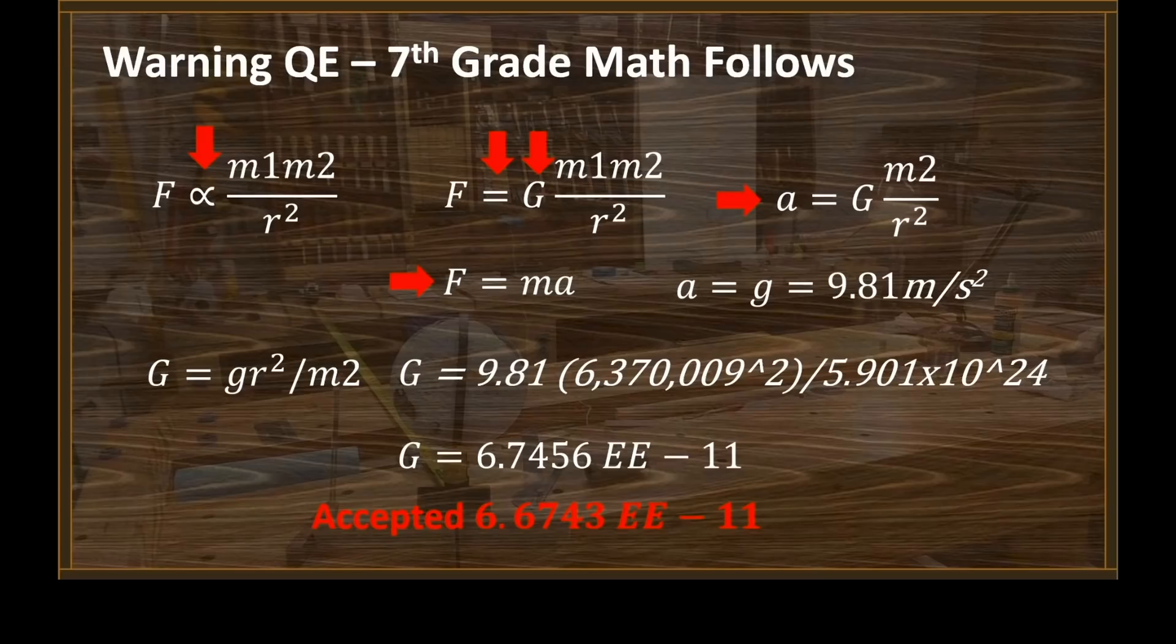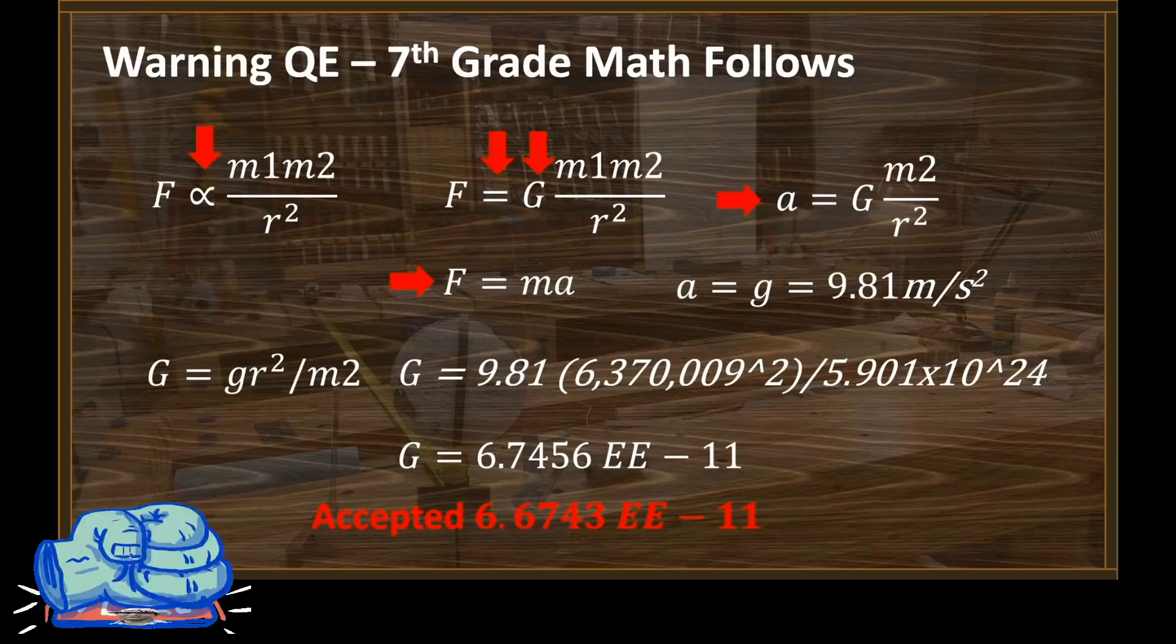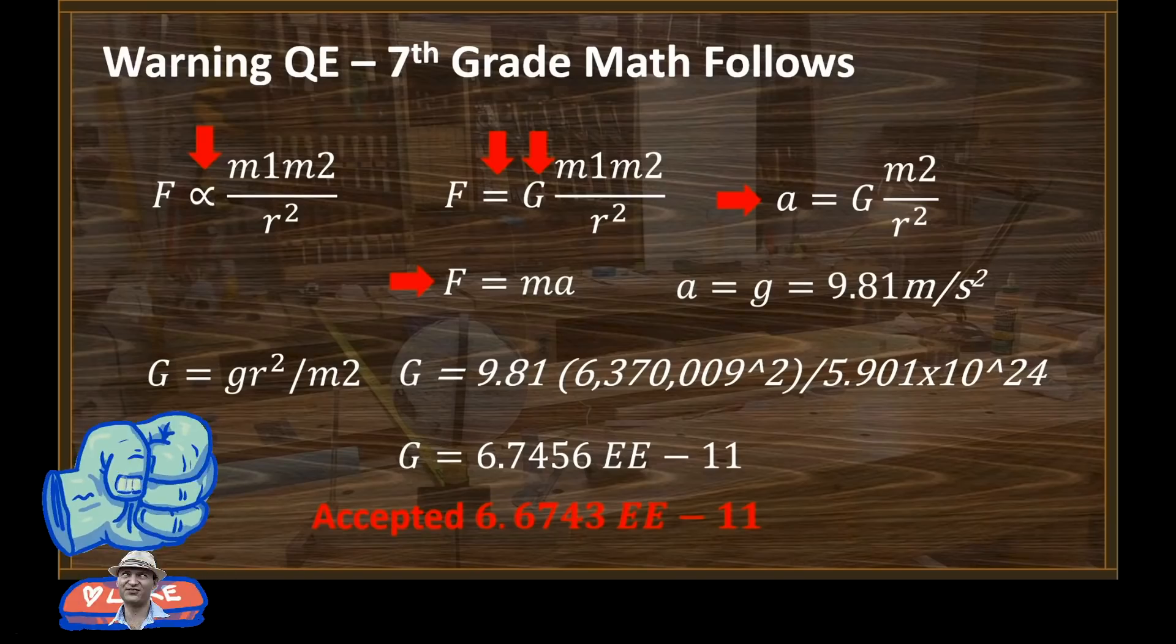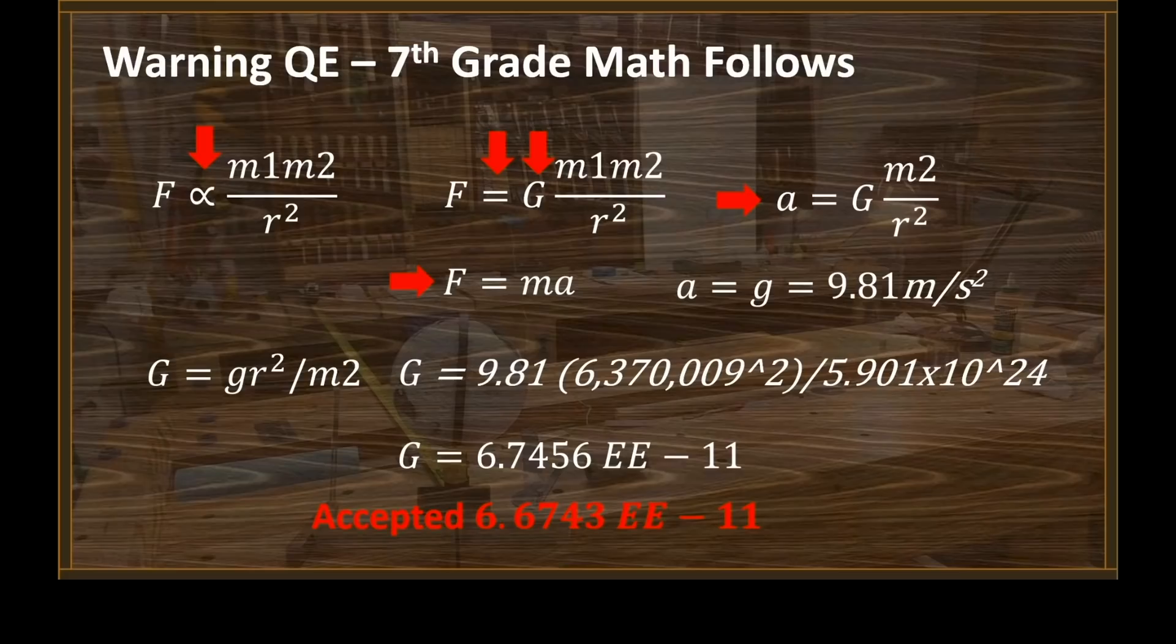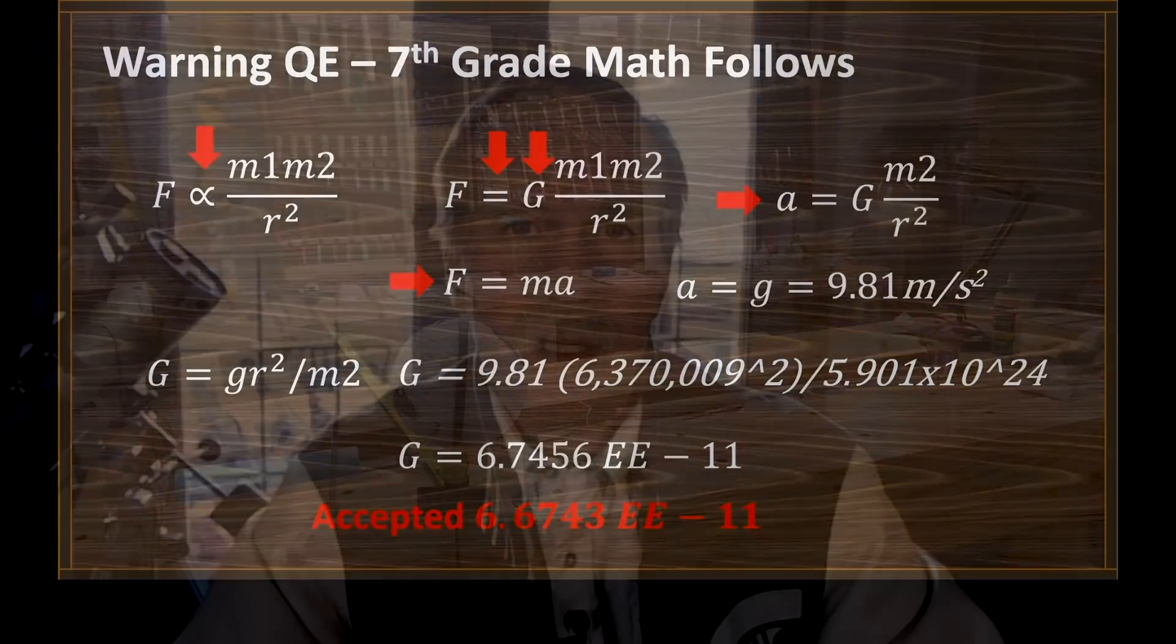We can solve the equation in the upper right corner for big G and find that that is equal to little g, R squared, divided by M2. We now have everything we need. And Cavendish would have had everything he needed. He just didn't state it this way. When we run through the numbers, we get a value for G, which Cavendish could easily have stated as well. He just didn't. Of 6.7456 times 10 to the minus 11th. That, again, is about 1% off from the accepted value today.